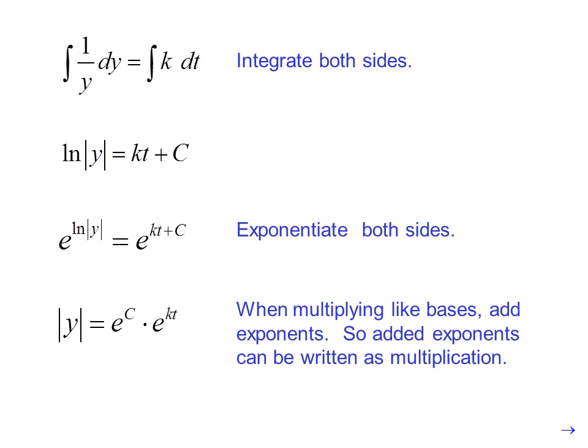Exponentiation and natural log are inverse functions, so we're left with the absolute value of y on the left-hand side. On the right-hand side, when multiplying like bases, we add exponents, so added exponents can be written as multiplication.